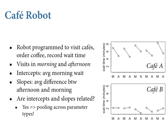Recall the coffee example from last week introducing multilevel models. Now imagine a robot programmed to visit cafes and order coffee, recording how long it waits to get its cup. Think about the Paris and Berlin cafes again. The basic insight for varying intercepts was that pooling data across cafes lets you learn faster about the true average waiting times at both cafes, and the order you visit them is irrelevant - information should move between them. That's what varying intercepts models do.